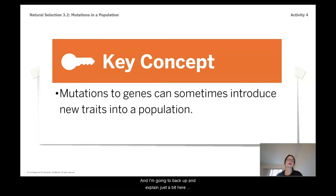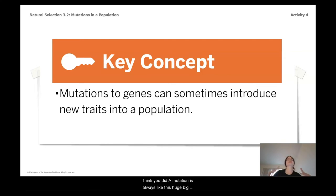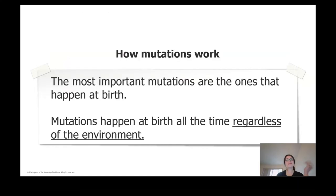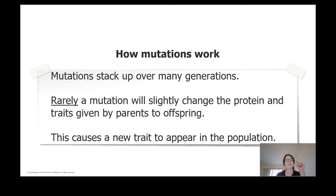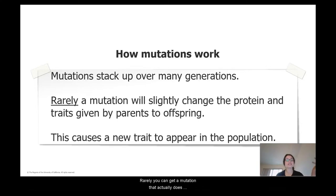I want to back up and explain, because in my experience this is one of the most misunderstood parts of natural selection. People think you get a mutation and it's always this huge dramatic change — that's not really how it goes. The most important mutations are ones that happen at birth, and this happens all the time regardless of environment. Usually the mutation either doesn't change the trait or only changes it in a tiny way you can't notice. But because mutations stack up over generations, rarely you'll get a mutation that significantly changes the protein and therefore changes the traits you see — and this is what causes new traits in a population.